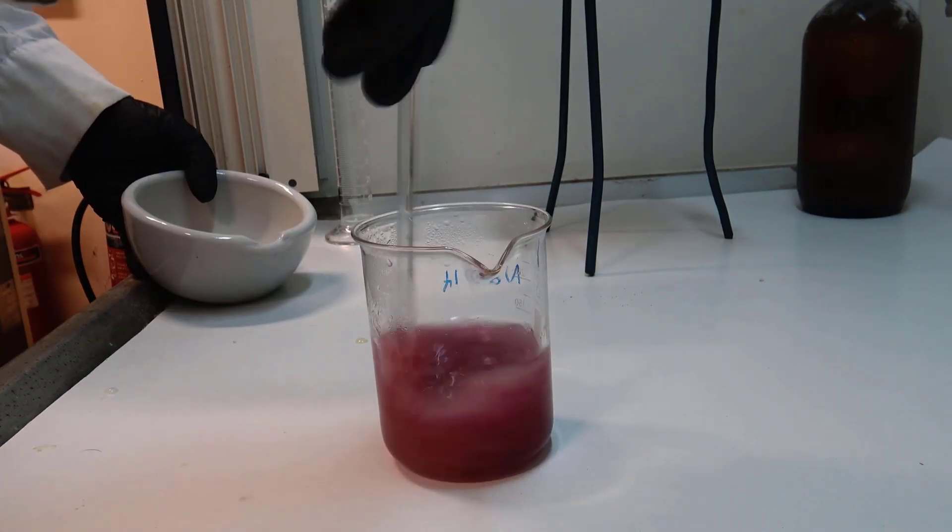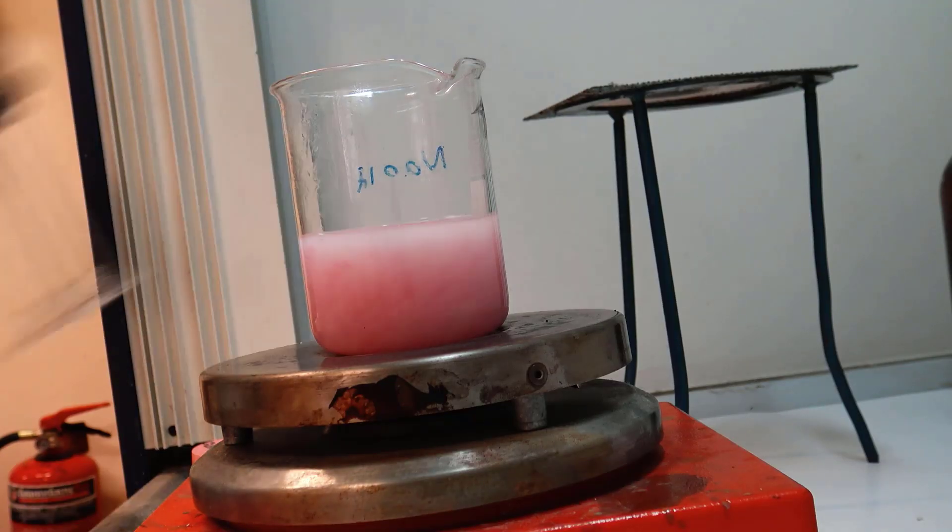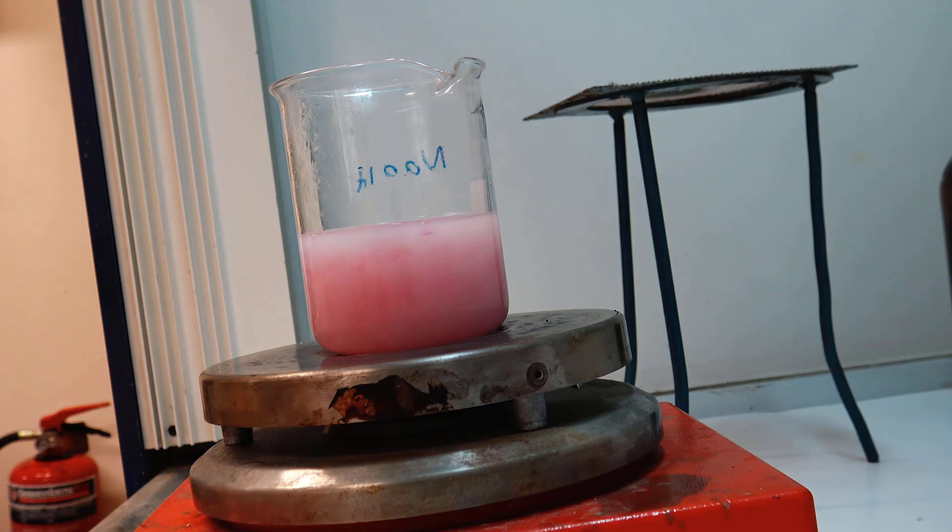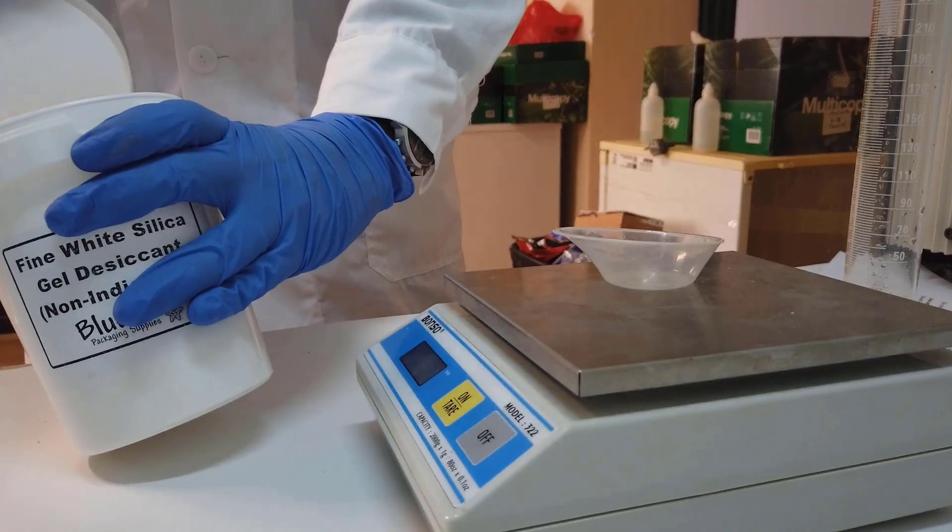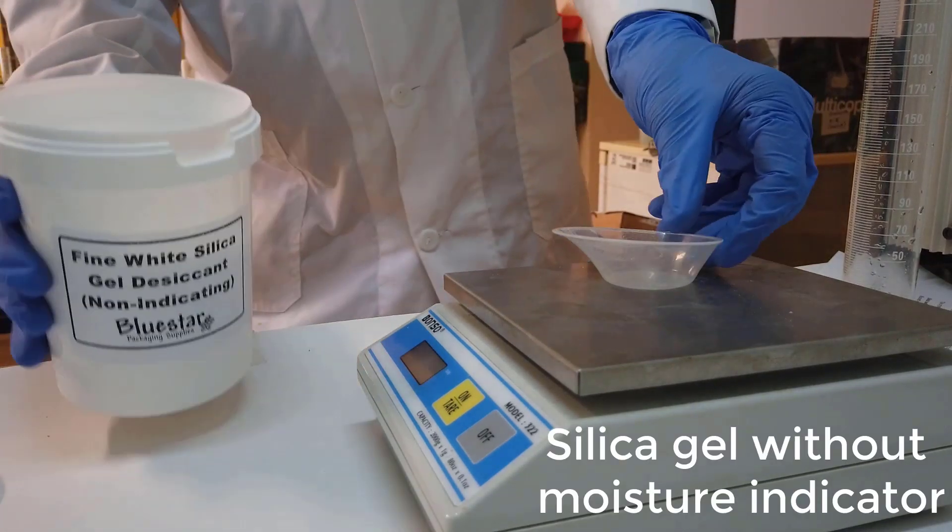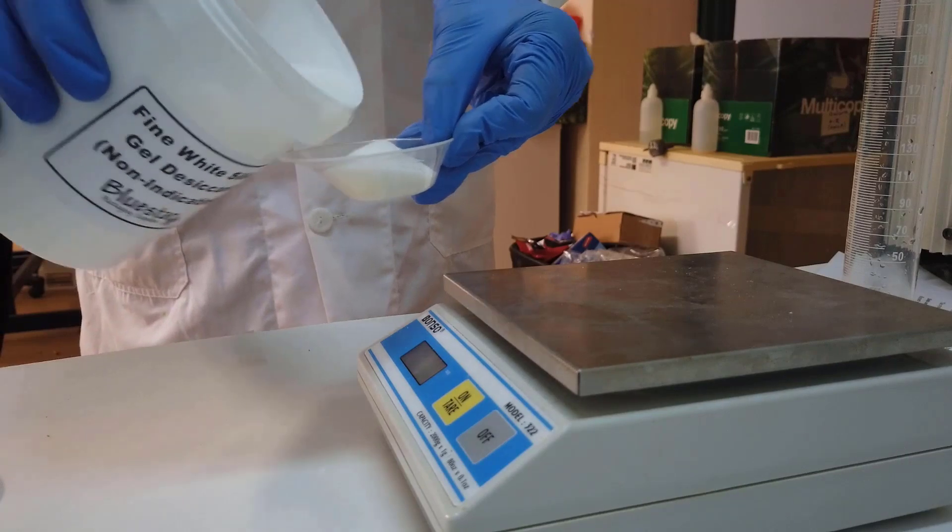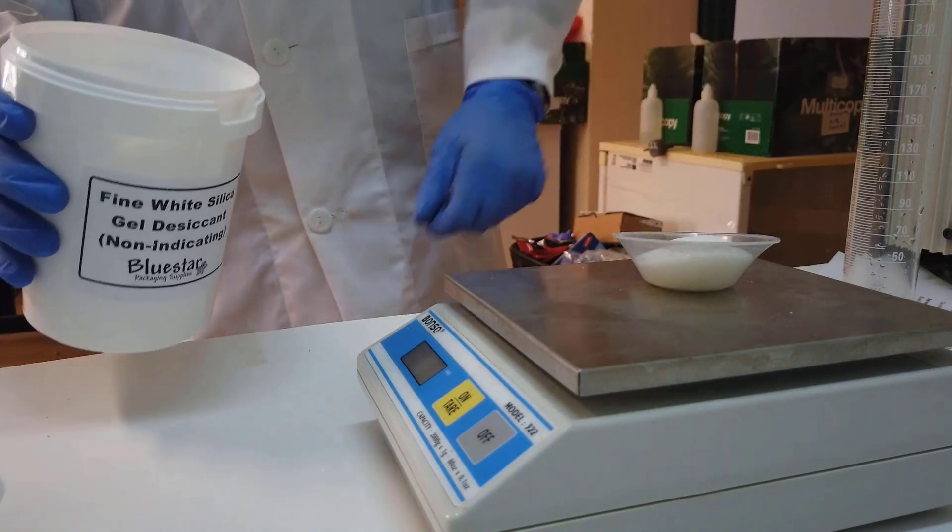However, the orange moisture indicator turned the solution dark pinkish red and therefore unsuitable for the chemical aquarium experiment. Now I had to get an indicator-free silica gel and I found this one on eBay, which is really suitable because the gel beads have really small diameter.